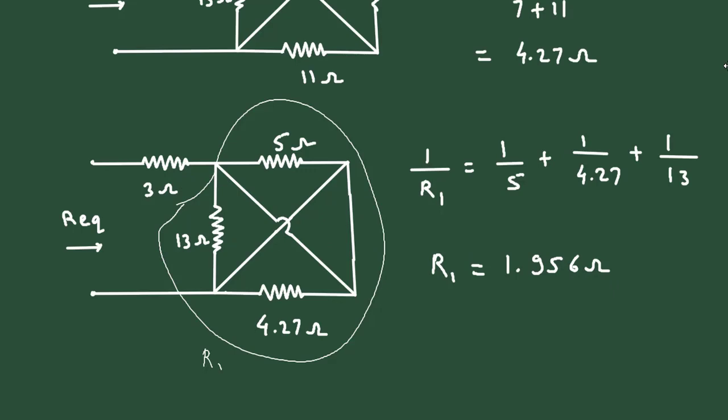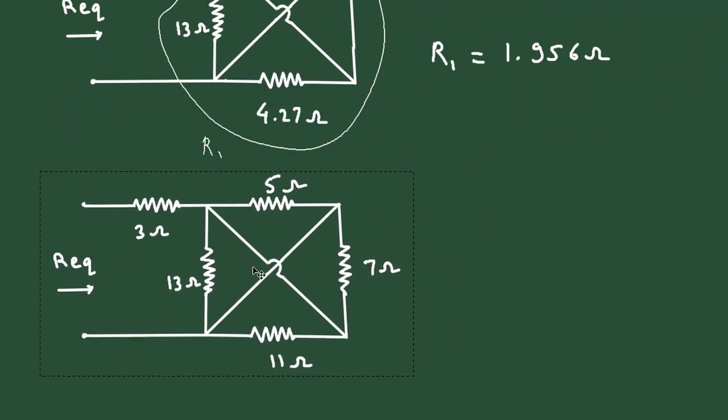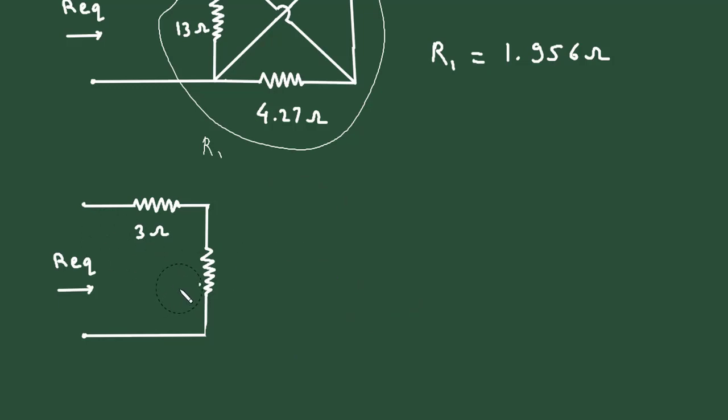So, this is the value of R1. Now, you can erase this whole section. This 1.956 ohm is in series with this 3 ohm.